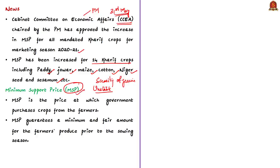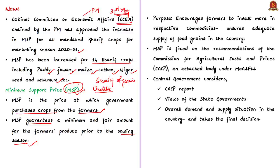MSP can be defined as the price at which the government purchases crops from farmers. By purchasing crop produce, the government guarantees a minimum and fair amount for the produce. The government announces the minimum support price even before the start of the sowing season. When farmers are assured a minimum price, they invest more, minimizing disruption in the farm chain. This ensures adequate supply of food grains and enough buffer stock to support the poor through the Public Distribution System.